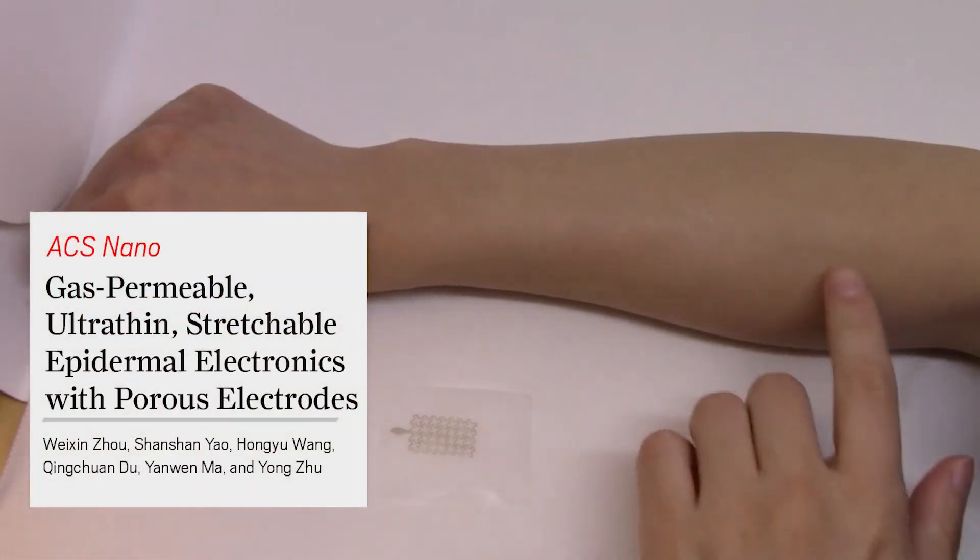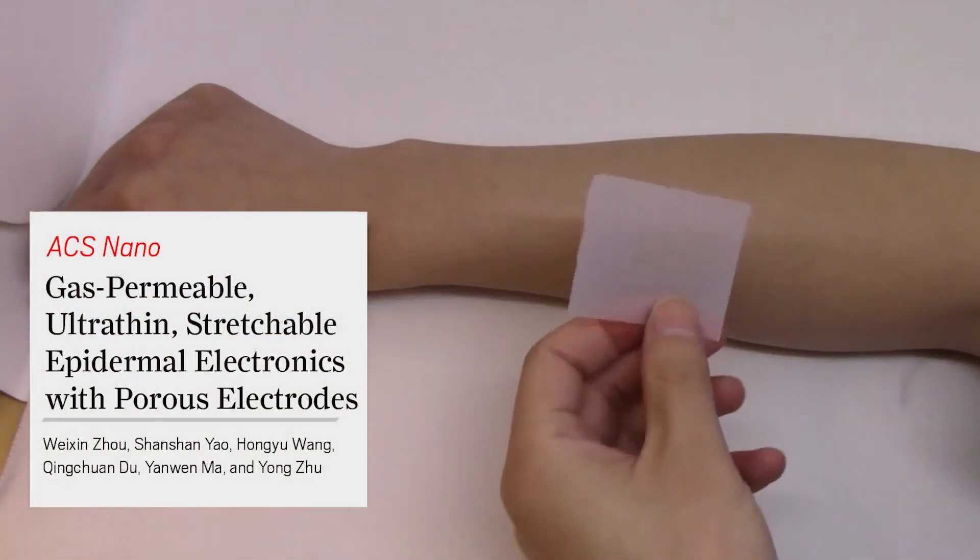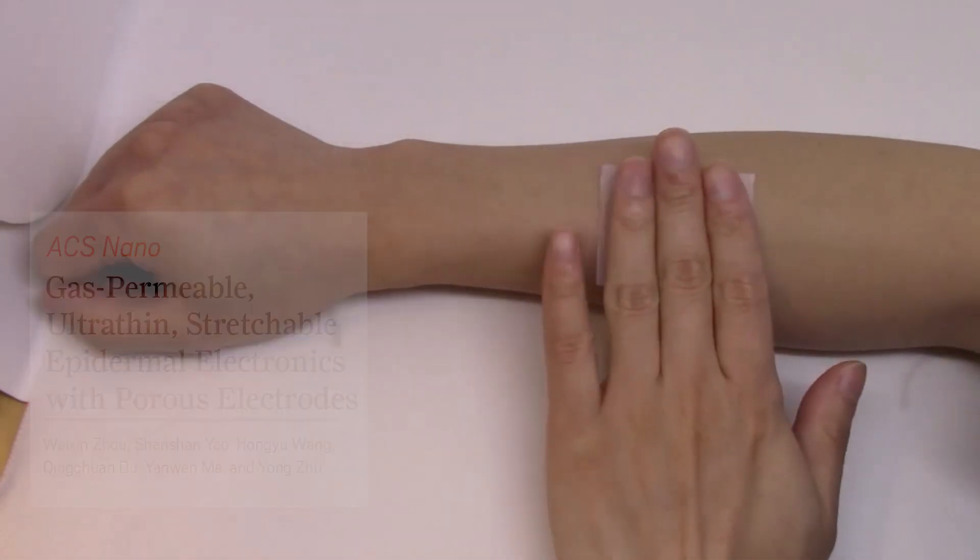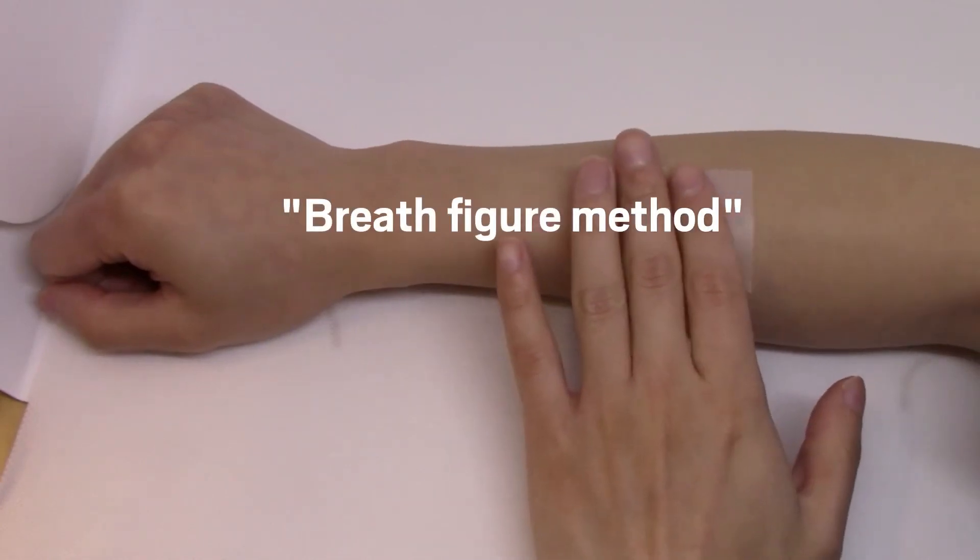Now, a team of scientists have developed a new porous electrode that can be made using a cheap and simple method called the breath figure method.